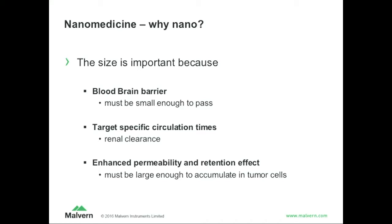Why is nano even important in nanomedicine? There are certain things like the blood-brain barrier — you need to make things small enough to actually get into the brain. You maybe want to target specific circulation times. Depending on how large the nanoparticles are, they spend more or less time in the bloodstream because they might get eliminated or get stuck somewhere. And then there's the EPR effect — the enhanced permeability and retention effect — where you can use the fact that some cancer cells actually leak a little bit and have larger pore sizes, so you can deposit larger nanoparticles there and target your chemotherapeutic agent to only the oncologically affected cells.